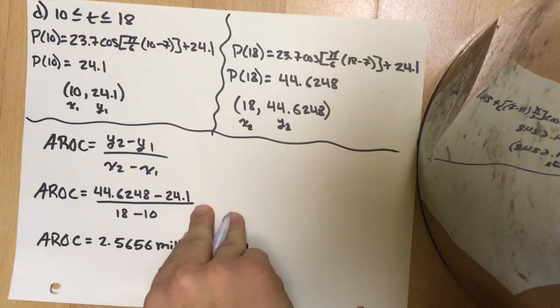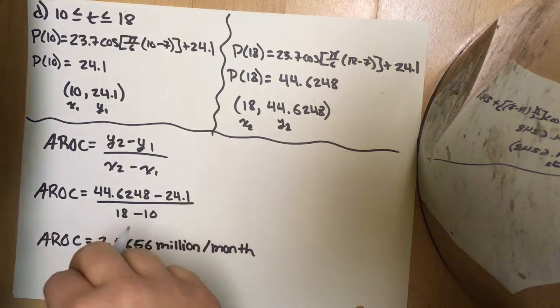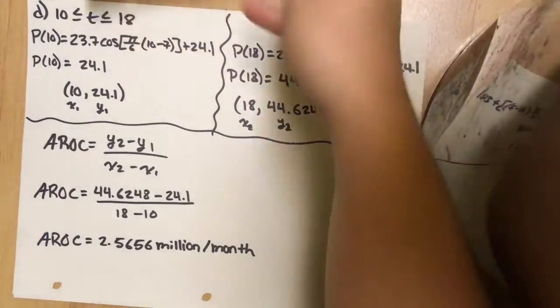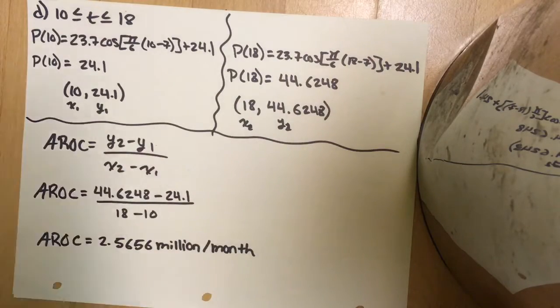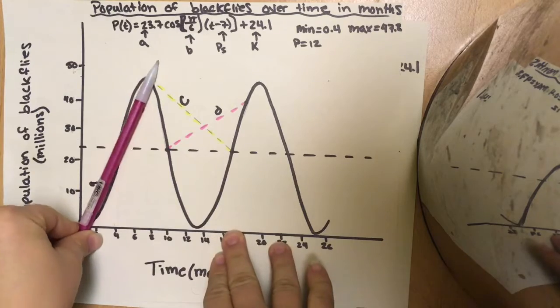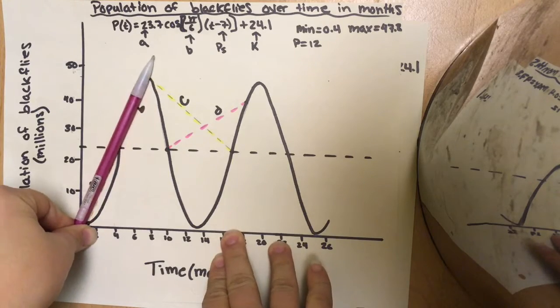We did, in fact, come to the conclusion that B had the greatest rate of change: 7.9 million per month. If we look at our graph, that is what we estimated before because it has the steepest slope.